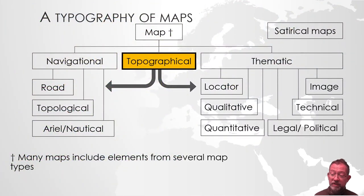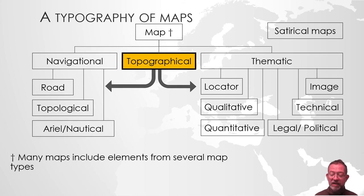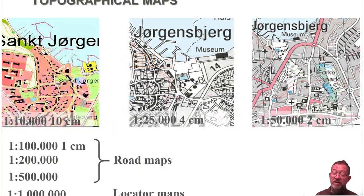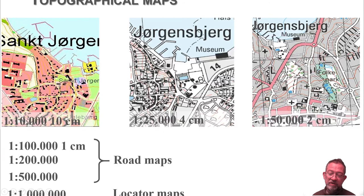Topographical maps can often be difficult to distinguish from road maps. In general, as the scale of a map goes down, it typically changes from being a topographical map to a road or locator map. Looking at classical topographical maps of Denmark, the 1:10,000 map has the smallest details — it's the most detailed map of Denmark, showing individual buildings, outhouses, and small paths.